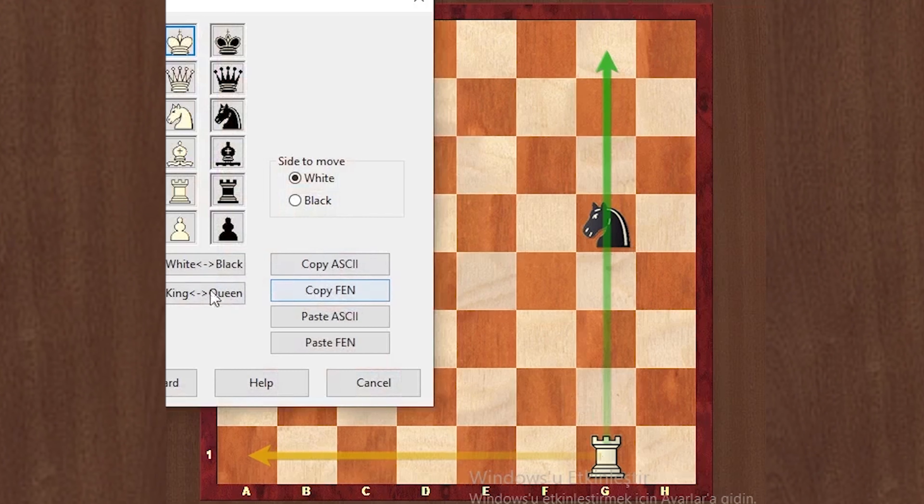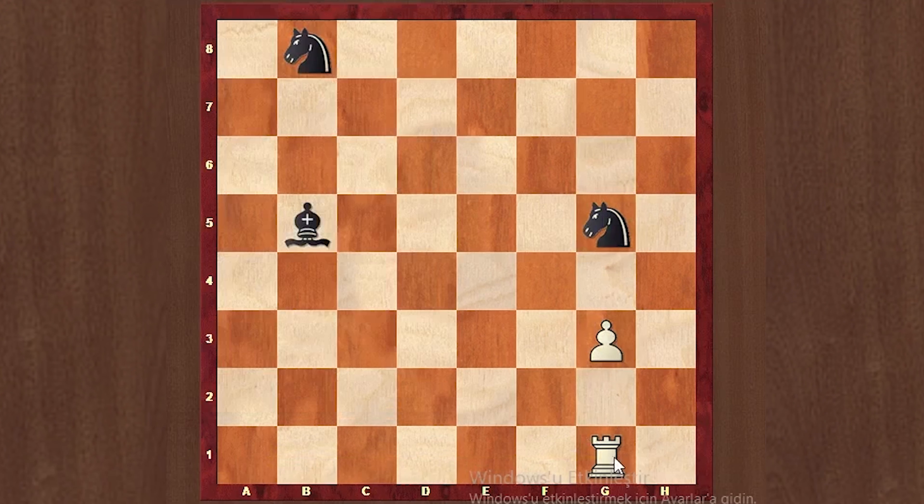Our other bishop, because it starts in black, can move like this. Just like the rook, if the path is empty, it can go to the end. We removed one of the pieces and placed a bishop here.